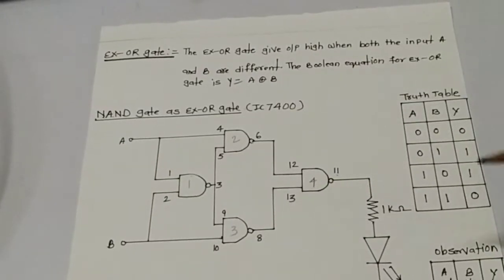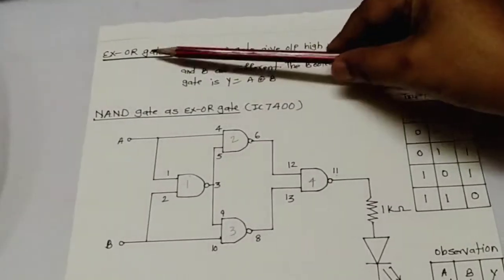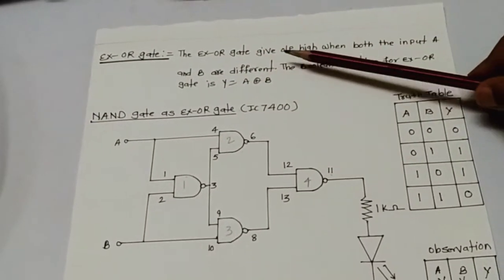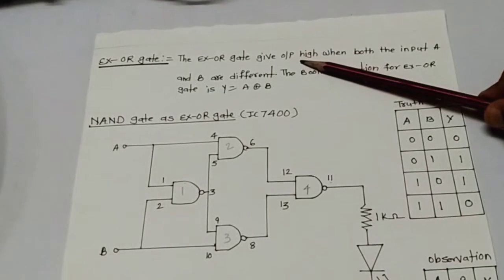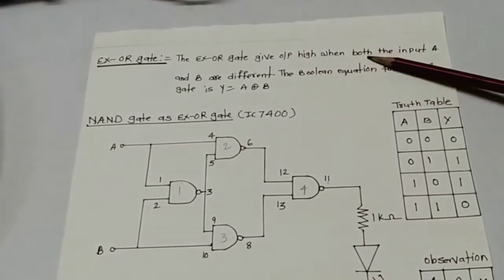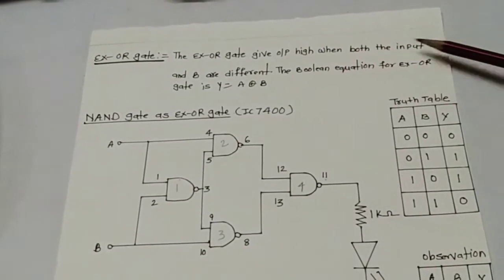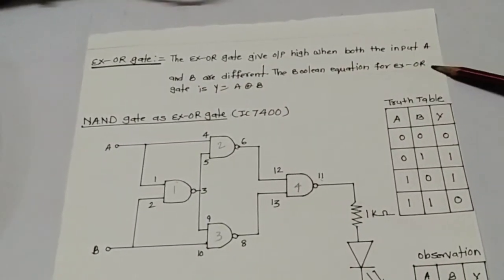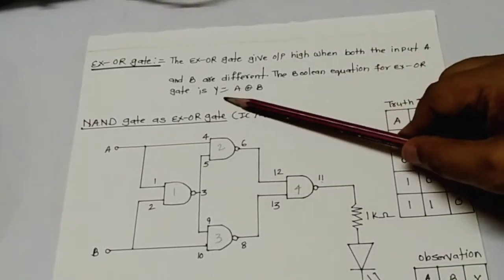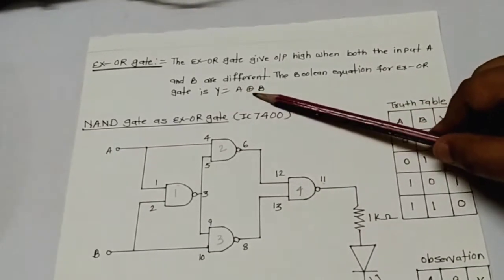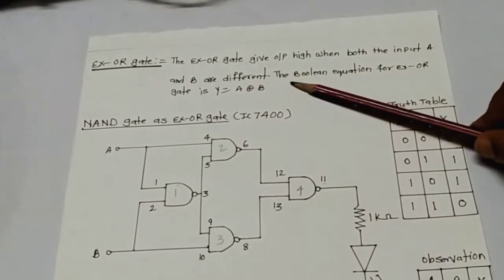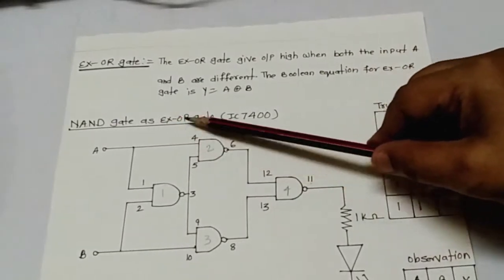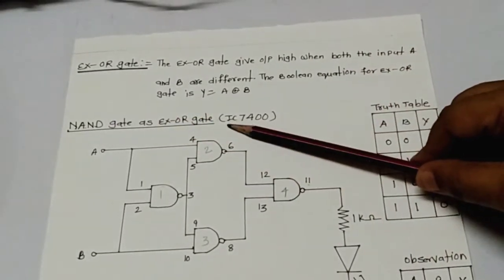Hi guys, today my practical is XOR gate. XOR gate gives the high output when both inputs A and B are different. The Boolean equation of the XOR gate is Y equals A XOR B. Today I will show you NAND gate as a XOR gate.